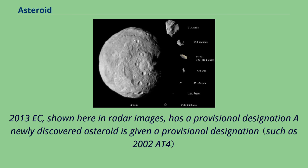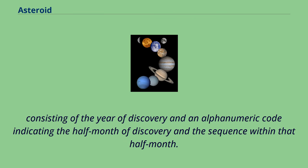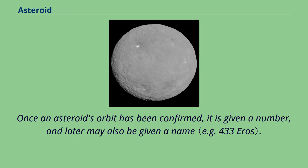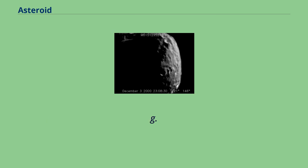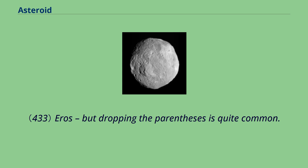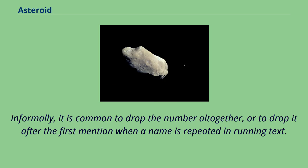A newly discovered asteroid is given a provisional designation consisting of the year of discovery and an alphanumeric code indicating the half-month of discovery and the sequence within the half-month. Once an asteroid's orbit has been confirmed, it is given a number, and later may also be given a name. The formal naming convention uses parentheses around the number, but dropping the parentheses is quite common, and informally it is common to drop the number altogether after the first mention when a name is repeated in running text.